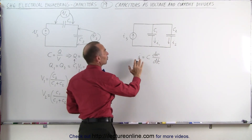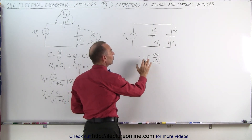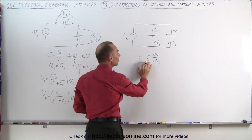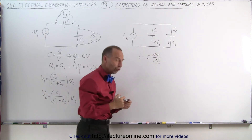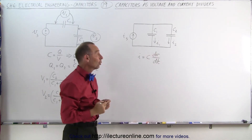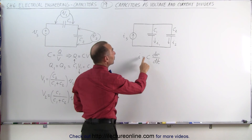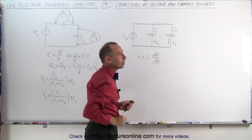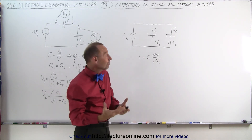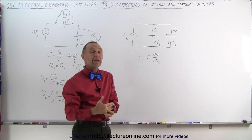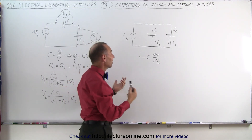The current in a branch equals the capacitance times the rate of change of voltage over time. In other words, the current is proportional to the capacitance. A larger capacitor means a larger current, and a smaller capacitor means a smaller current.